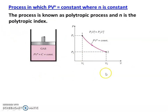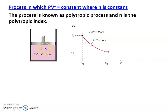In the pressure-volume diagram, there is a piston and cylinder. The piston reciprocates — it moves up and down. Initially, the piston is at position 1 at pressure P1 and volume V1. The gas pressure pushes the piston upward, so the gas is expanding. Volume increases and pressure decreases from P1 to P2. This process is called polytropic expansion. The condition for this process is PV to the power n equal to constant.